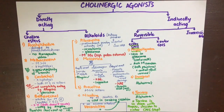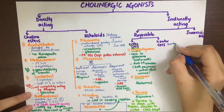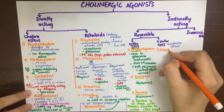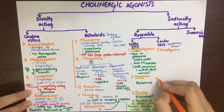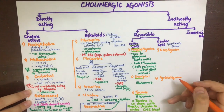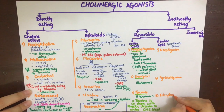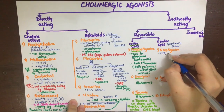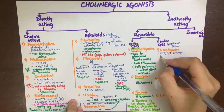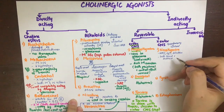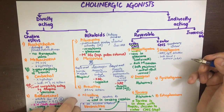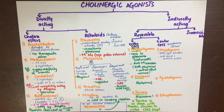Reversible AChE inhibitors that cannot enter the CNS have a quaternary ammonium structure — the nitrogen atom is positively charged with four functional groups and thus ionized, so it cannot enter the CNS. These include neostigmine, pyridostigmine, and edrophonium. Neostigmine's actions are most pronounced on the neuromuscular junction (NMJ), GIT, and bladder. It acts both directly — as it has a structure similar to acetylcholine and can act on acetylcholine receptors — and indirectly by inhibiting acetylcholinesterase.